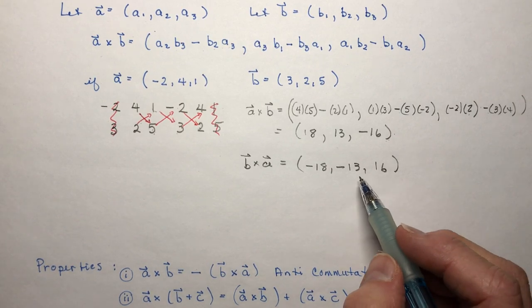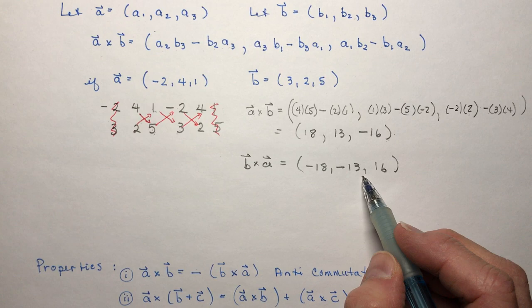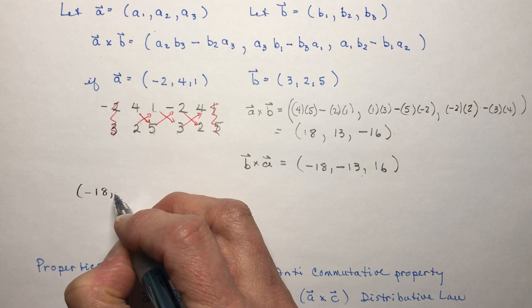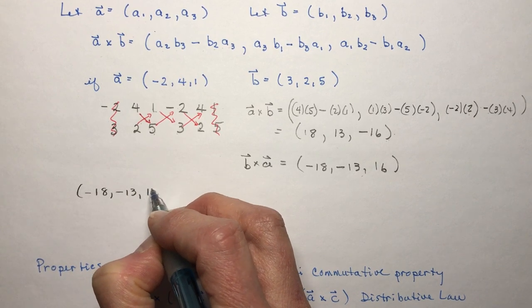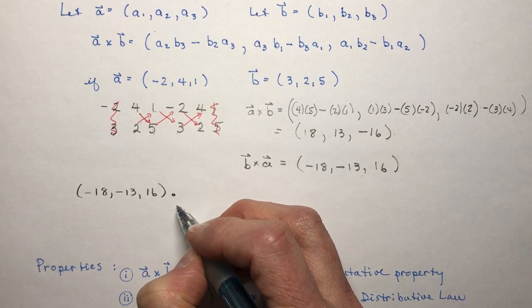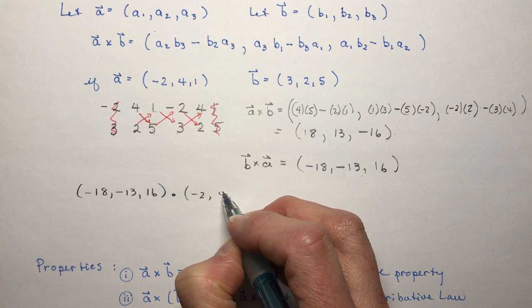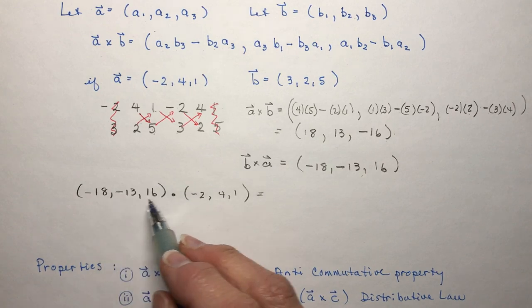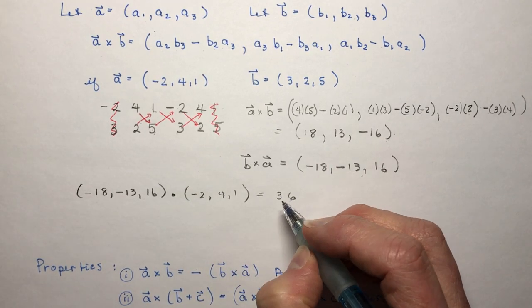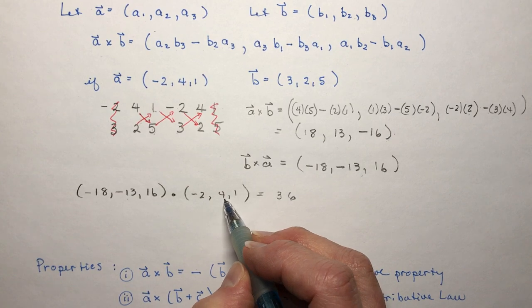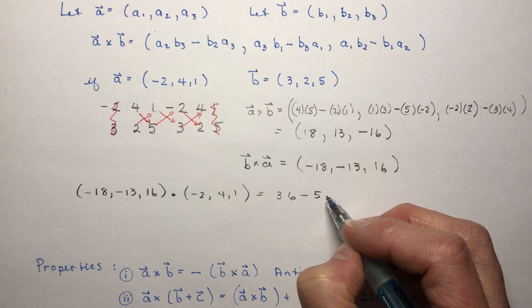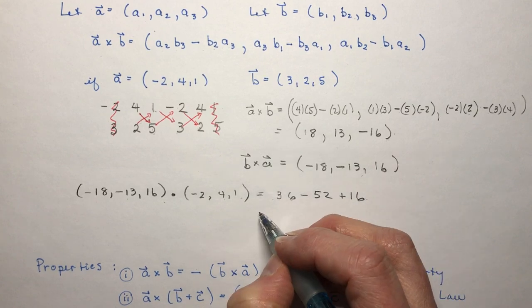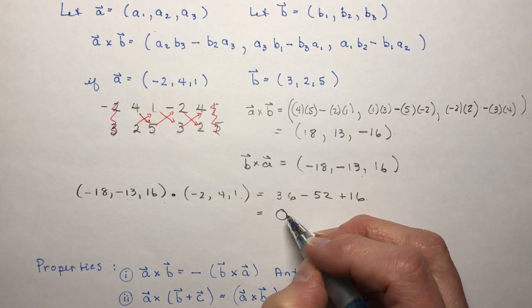So I could say minus 18 minus 13 16 we're not afraid of negative numbers are we and we're going to dot that with minus 2 4 1 that doesn't matter if I've chosen that one or this one. So if I do the dot product so I have minus 18 times minus 2 that's 36 minus 13 times 4 is minus 52 and 16 times 1 is 16 and that's 52 minus 52 gives me 0.